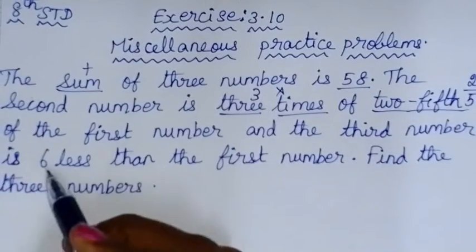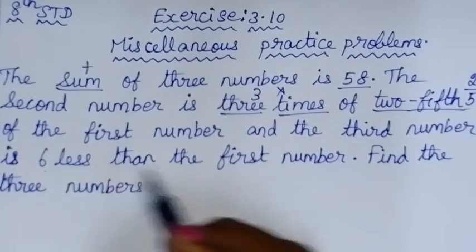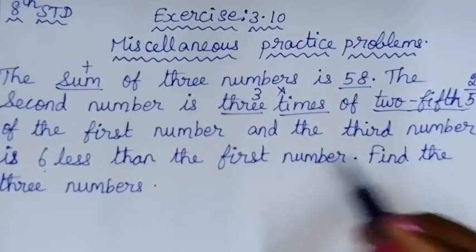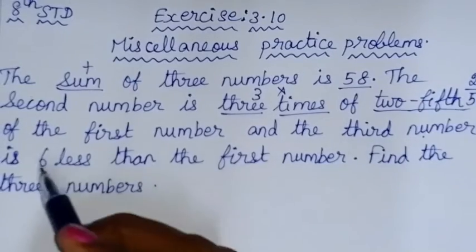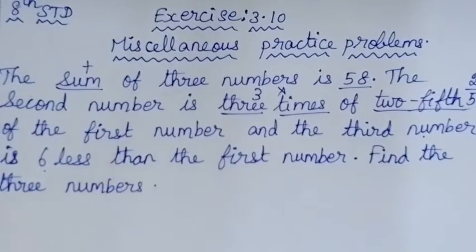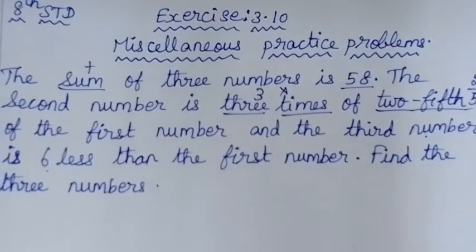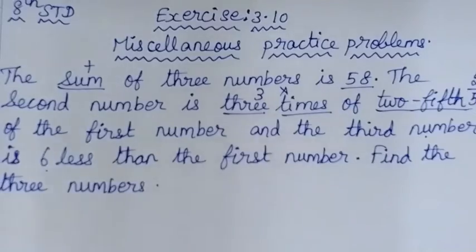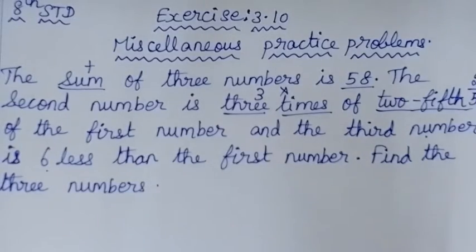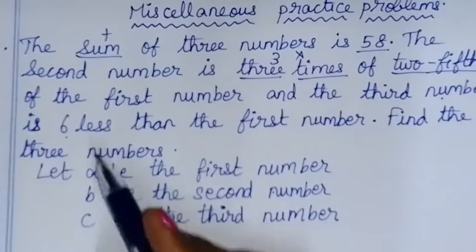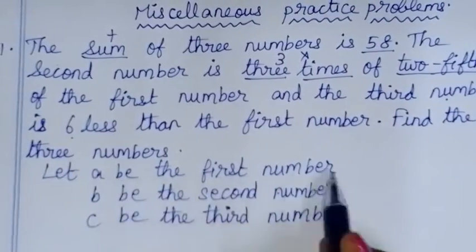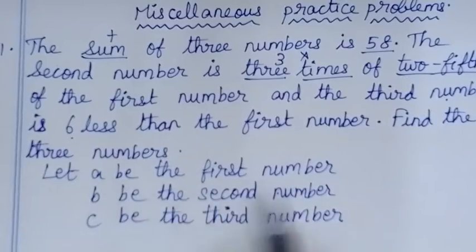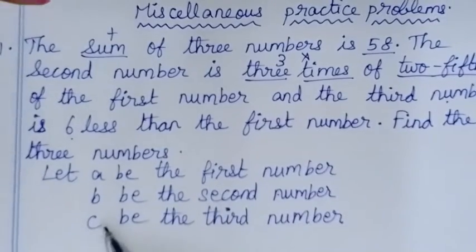The third number is 6 less than the first number. So there are 3 conditions. Now we consider variables: A is the first number, B is the second number, C is the third number.